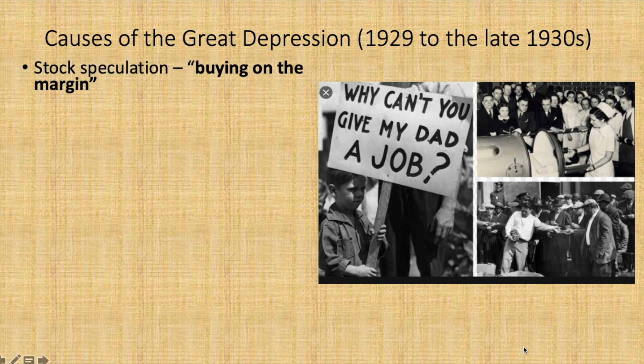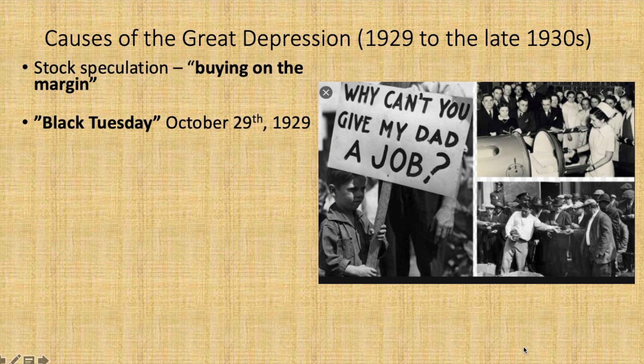Once the market crashed and prices fell, brokers demanded that investors pay off the full price of their stocks, something the investors simply could not do. Black Tuesday of October 29, 1929 — we will go into more depth on this in the next slide.